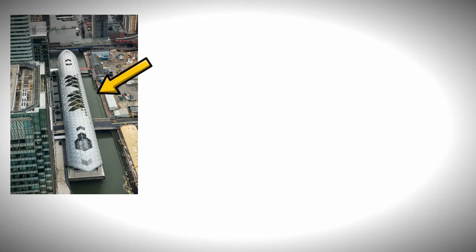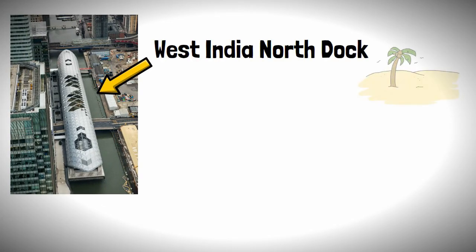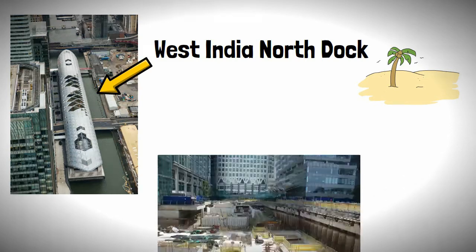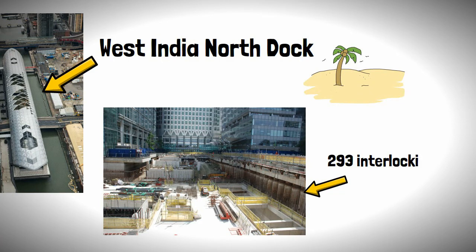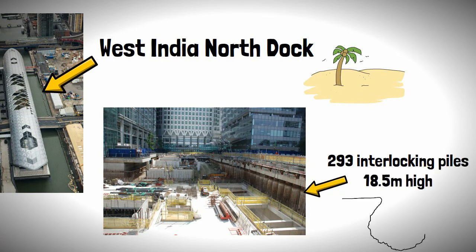The station is located within the West India North Dock on an artificial island, with the station being built using, you guessed it, a cofferdam consisting of 293 interlocking piles 18.5 meters high, allowing water to be pumped out and the station box constructed.